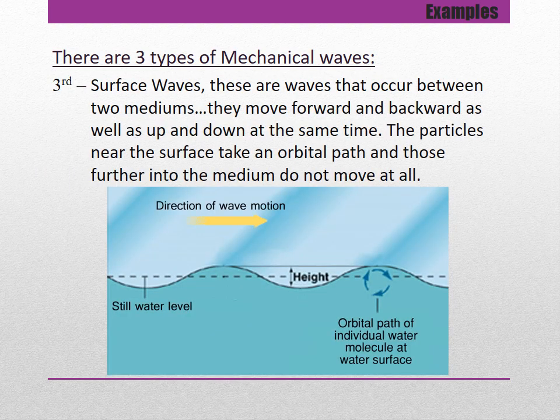The third type of mechanical wave is a surface wave. These are waves that occur between two mediums — they move forward and backward as well as up and down at the same time. The particles near the surface take an orbital path, and those further into the medium do not move at all. If you've ever gone diving, at the surface you bob up and down, but if you travel below the water you'll hit a point where you cannot feel any surface action and the ocean appears to be still.